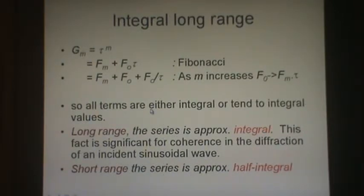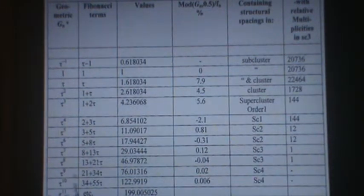Here are the geometric series with increasing order going downwards. And here are the long range values. They are all almost integral, for reasons we've just shown. But look at the short range values. They are all almost half integral: 0.5, 1, 1.5, 2.5, 4. And the differences from half integral values are listed on the right, where we've calculated the modulus of the geometric term G_N modulo 0.5. And it's about 5%. We're going to see that value come up again in the simulations.